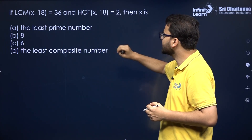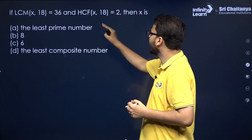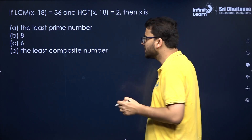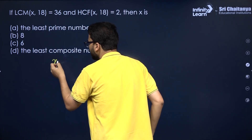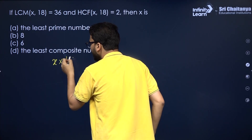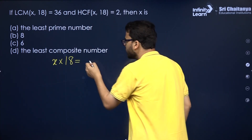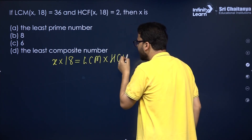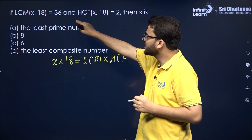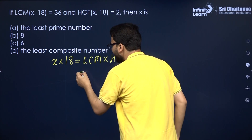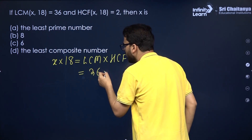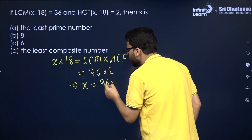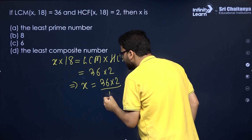The next question: the LCM of two numbers is given, their HCF is given, and you have to find the value of X. The numbers are X and 18. You know the property that the product of two numbers equals the product of their LCM and HCF. LCM is 36 and HCF is 2, so X into 18 equals 36 into 2. Therefore X equals 36 into 2 divided by 18, which gives 4.